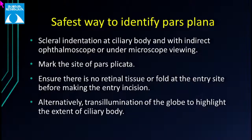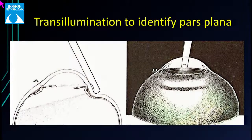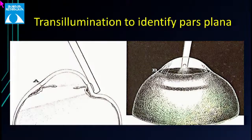In certain situations — anterior retinal traction, trauma, vitreous hemorrhage, or distorted anatomy like anterior segment dysgenesis or PFV — we may not know where the pars plana is. The safest way to identify it intraoperatively is scleral indentation with indirect ophthalmoscopy to localize the ciliary body, then make the sclerotomy. Another method is transillumination: illuminate at the opposite clock hour, and externally you'll see the iris as a dark zone, the ora as a dark zone, and a transillumination area between them corresponding to the ciliary body.